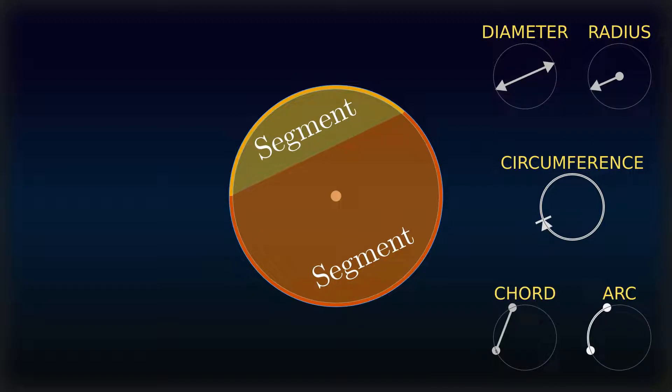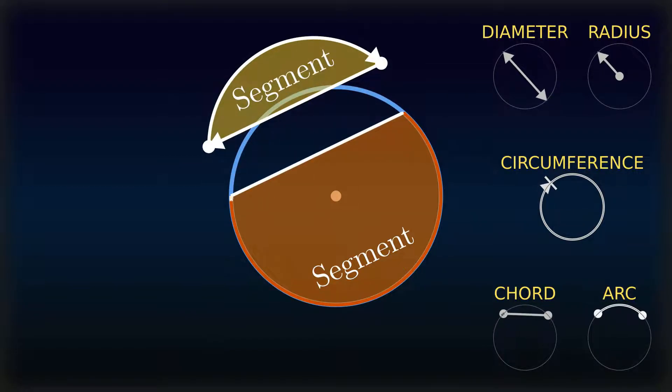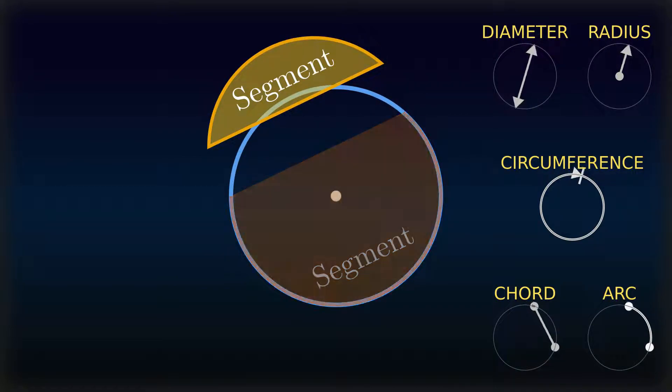A segment is a region bounded by a chord and one of the arcs connecting the chord's endpoints. Sometimes the term segment is used only for regions not containing the center of the circle to which their arc belongs to.